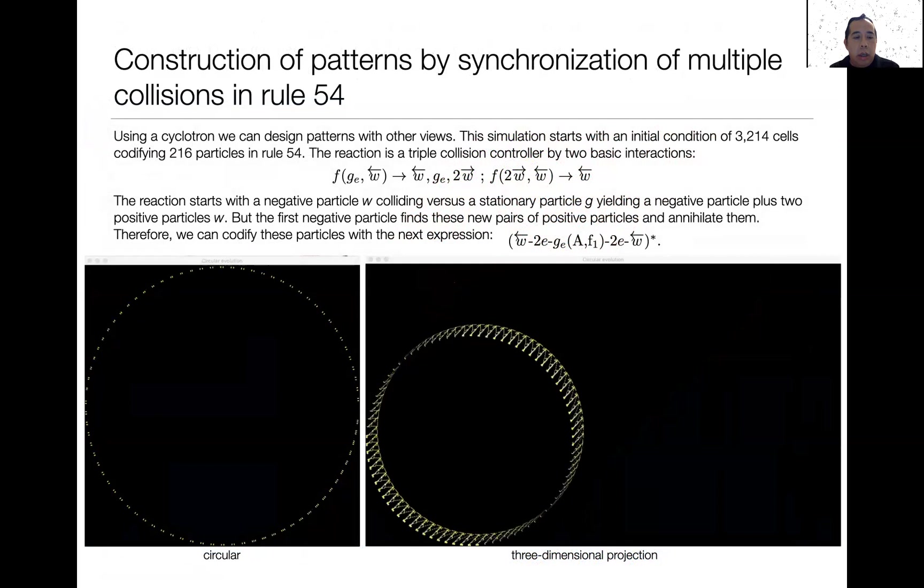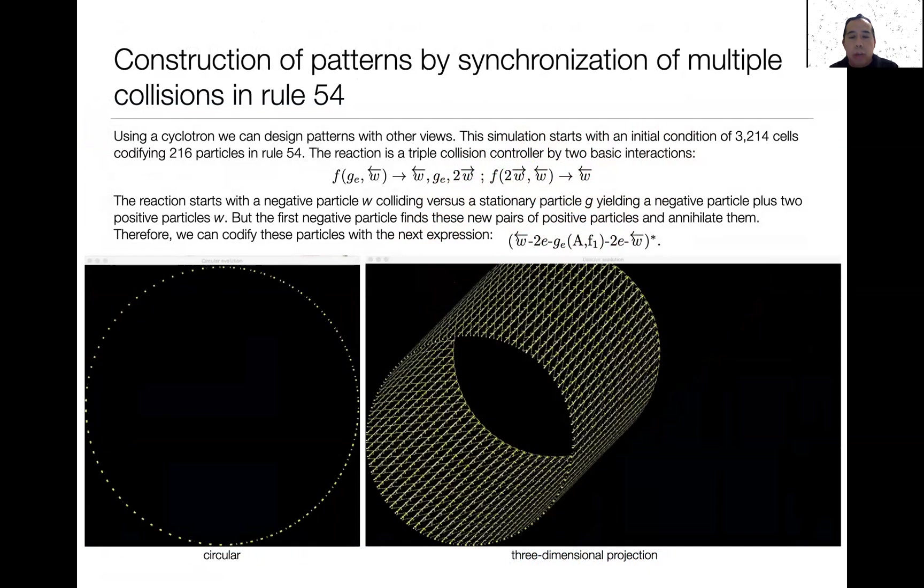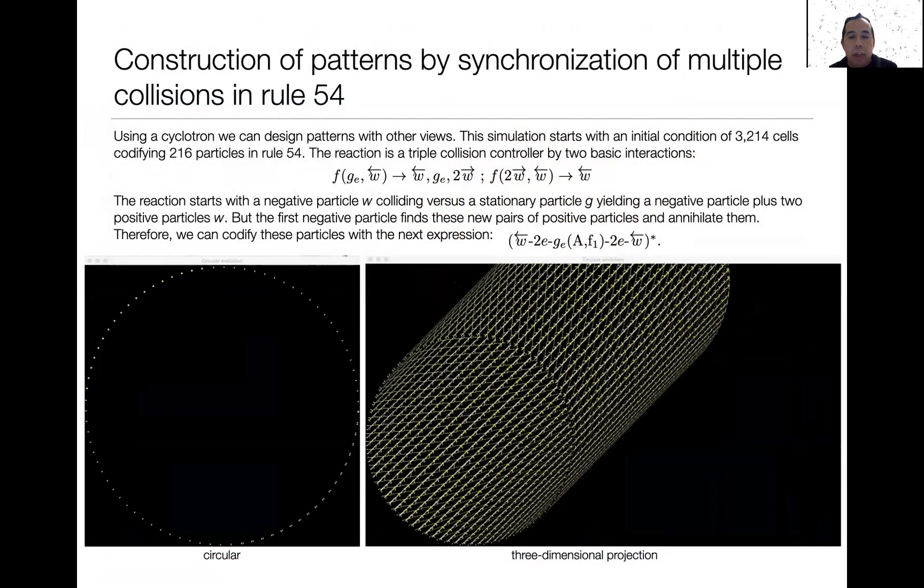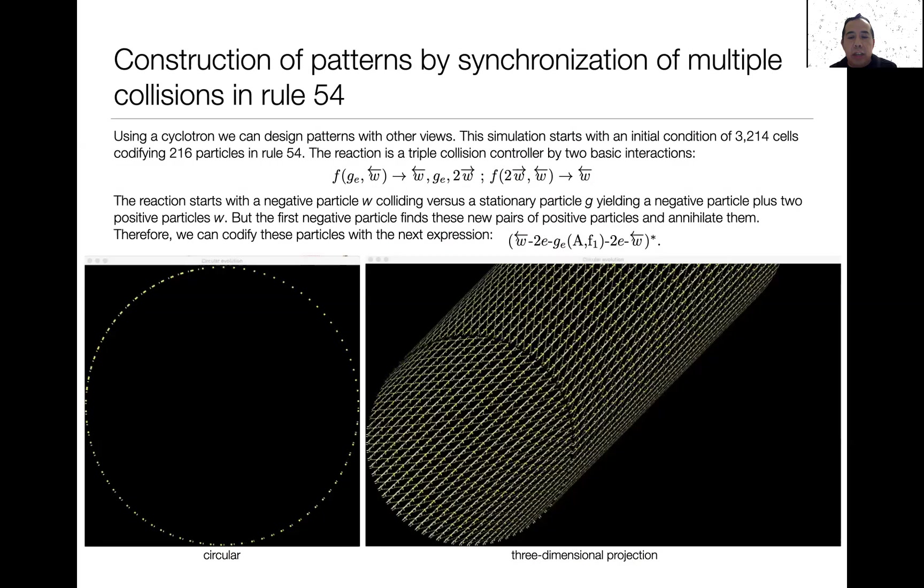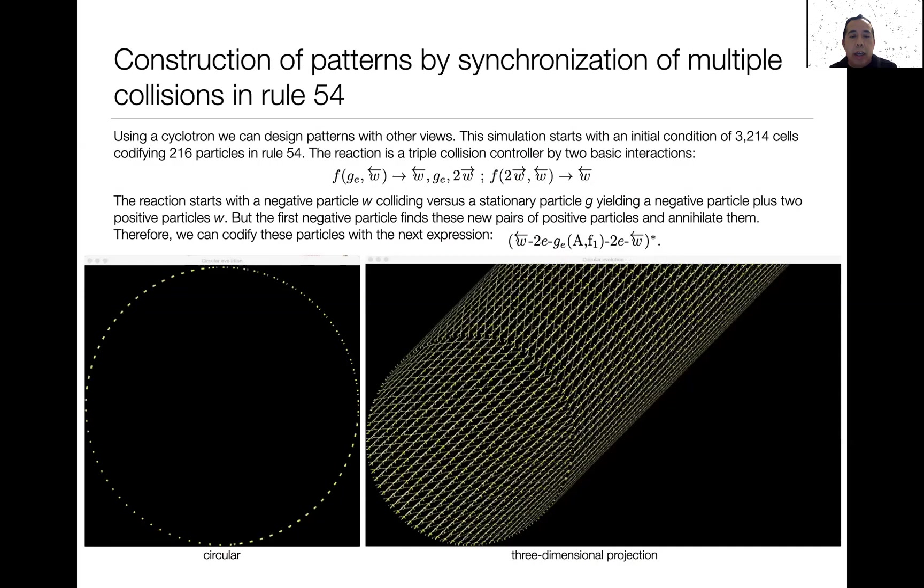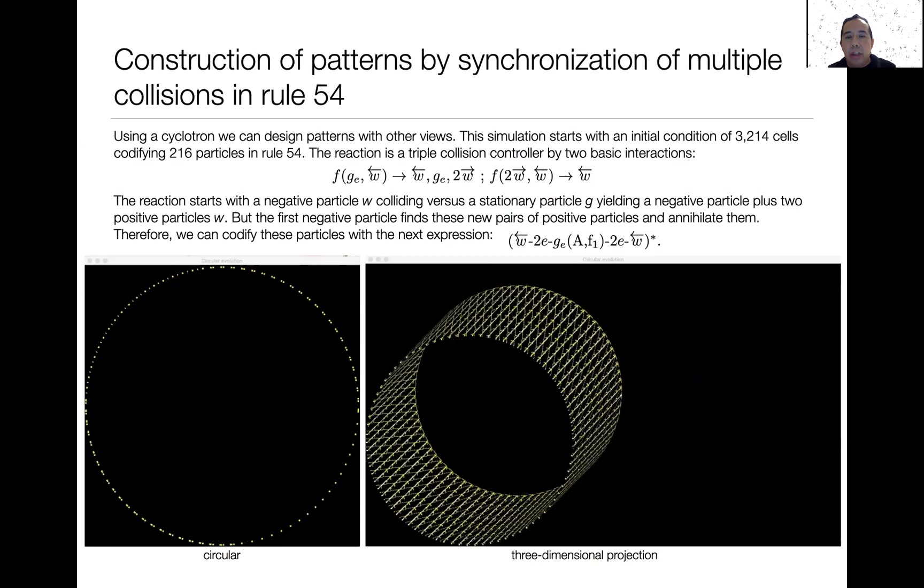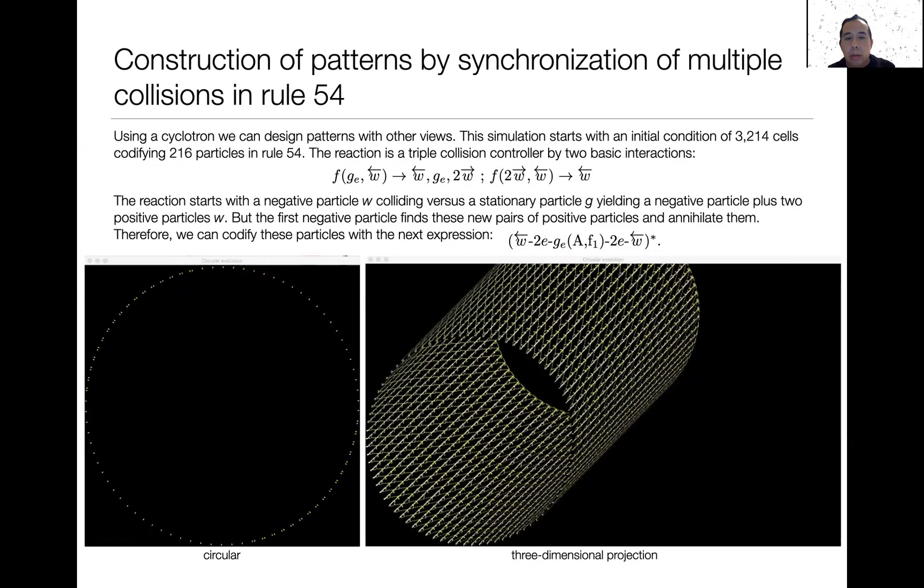Another example shows the synchronization of 216 particles to construct a periodic pattern across multiple collisions in Rule 54. The reaction starts with a negative particle colliding versus a stationary particle yielding a negative particle plus two positive particles, but the first negative particle finds this new pair of positive particles and annihilating them to continue to the next reaction. The patterns that is projected in three dimensions is a regular pattern where you can see a polygon that is constructed on the evolution.